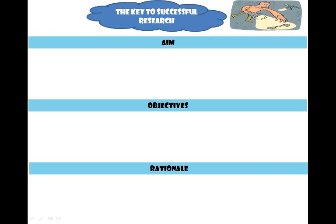This lecture will focus on three important and key points for a research project. So far we've looked at how to find information about a topic and how to use a framework to organize the information to help you focus on a specific area. That's very useful because today we're going to talk about the aim, the objectives, and the rationale.